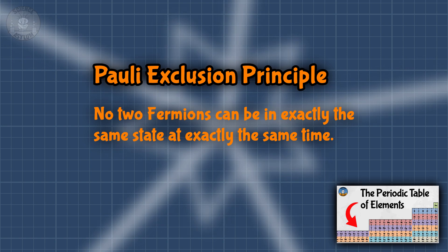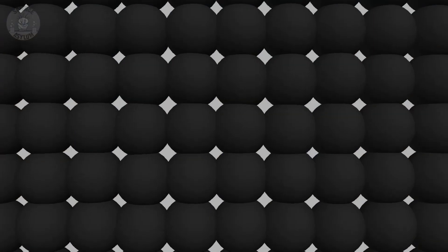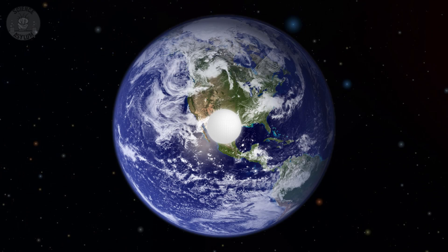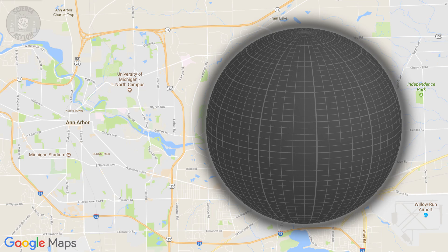Cue the Pauli Exclusion Principle! That principle doesn't just apply to electrons — it applies to all fermions. Neutrons are also spin-1/2 particles; they're fermions too. But because they're neutral, they can get a lot closer together. They reach densities comparable to atomic nuclei before they stop collapsing. Unlike the white dwarf, which is the size of a planet or moon, a neutron star would be the size of a small city.